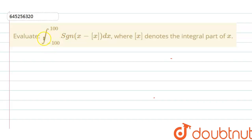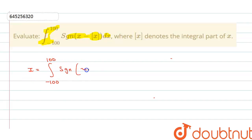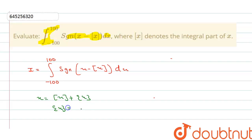Hello students. In this question we need to evaluate the integration of minus 100 to 100 of signum of (x minus greatest integer function of x) dx. So let I equal to that integral. We know that x equals the greatest integer function of x plus the fractional part of x, so from here we can say that fractional part of x equals x minus the greatest integer function of x.